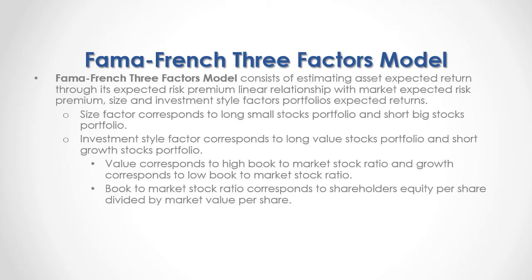The Fama-French Three Factors model consists of estimating asset expected return through the expected risk premium linear relationship with market expected risk premium, size, and investment style factor portfolio expected returns. The size factor corresponds to a long small stocks portfolio and short big stocks portfolio. The investment style factor corresponds to a long value stocks portfolio and short growth stocks portfolio. Value corresponds to high book-to-market stock ratio, and growth corresponds to low book-to-market stock ratio. The book-to-market stock ratio corresponds to shareholders equity per share divided by market value per share.